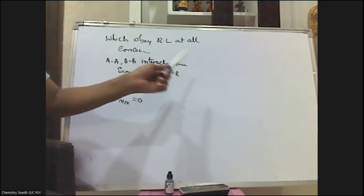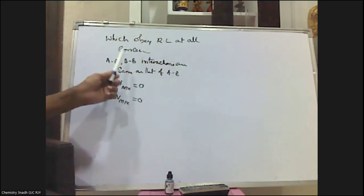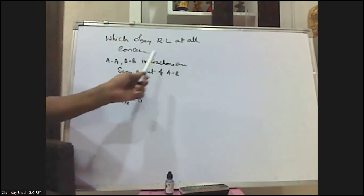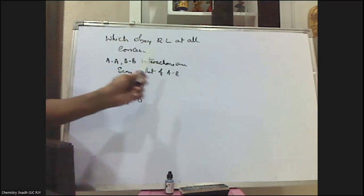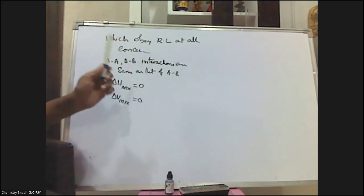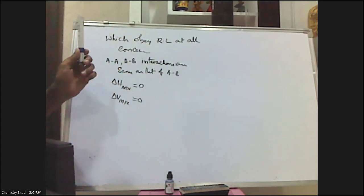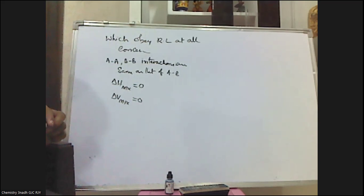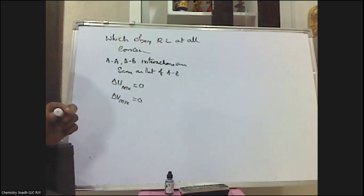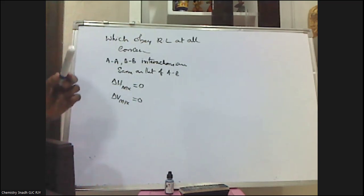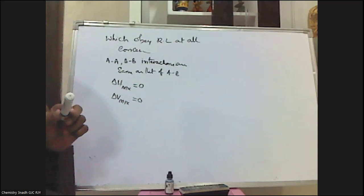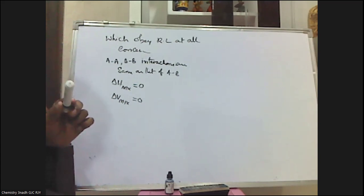Non-ideal solutions means AA and BB interactions are not the same as AB interactions. That means solute-solute and solvent-solvent major attractions differ from solute-solvent attractions.